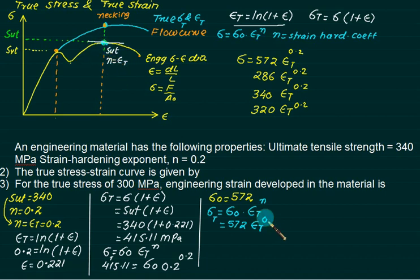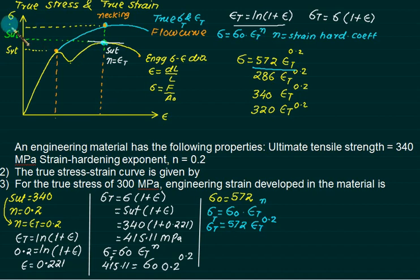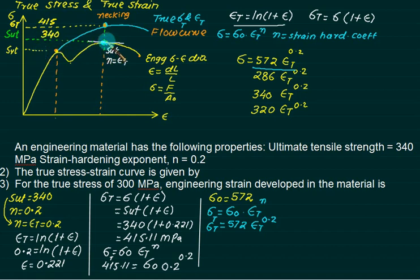The power in this equation is 0.2. So the equation is choice number one: σ = 572 · εₜ^0.2. The true stress at SUT is 415 MPa, while the engineering SUT value is 340 MPa. So 340 on the engineering stress-strain curve becomes 415 on the true stress-strain curve.